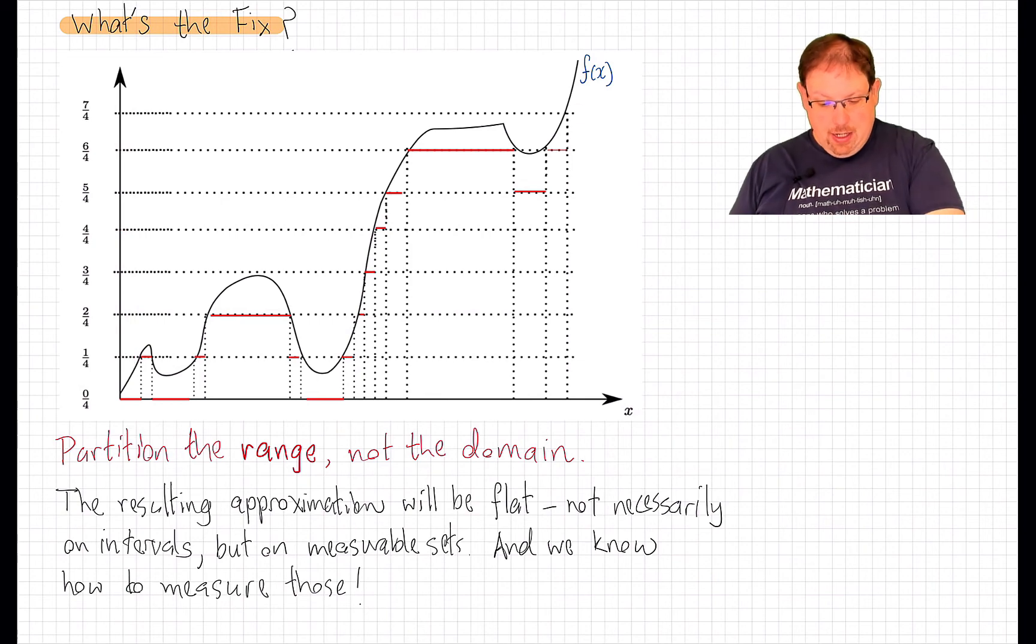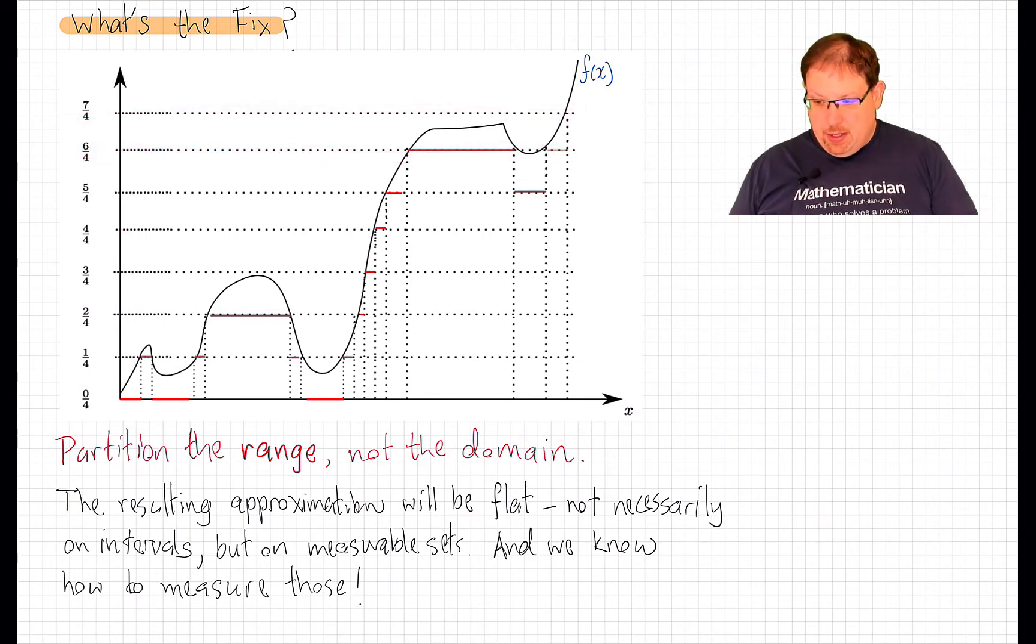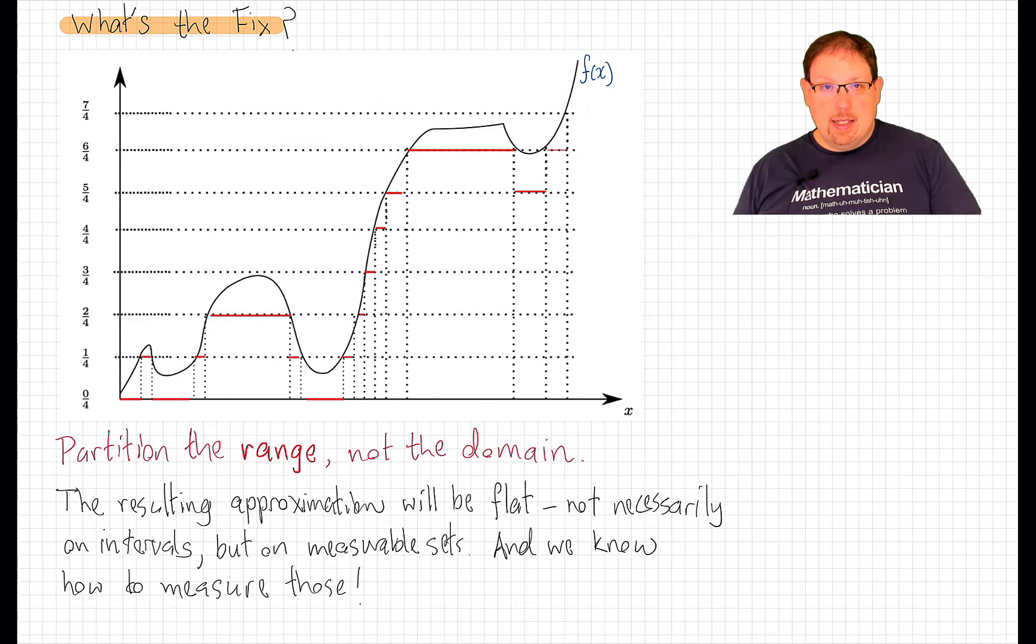On each interval in the range, we approximate the function by its value either at the top or the bottom, and then look at the set where the function takes values in between those two heights and see that it is a nice set in the domain.